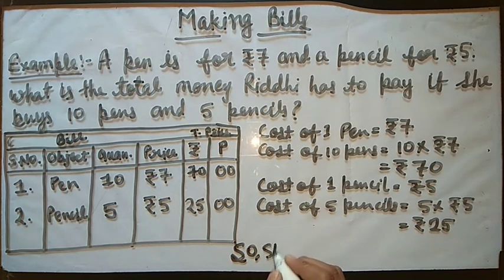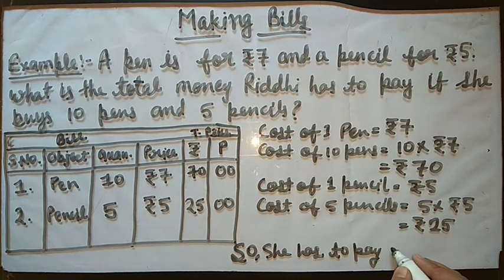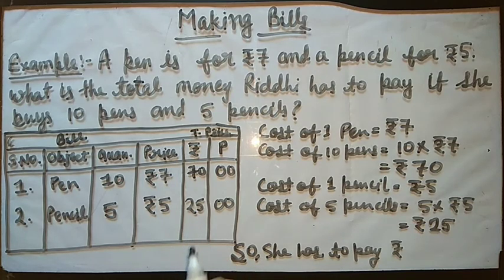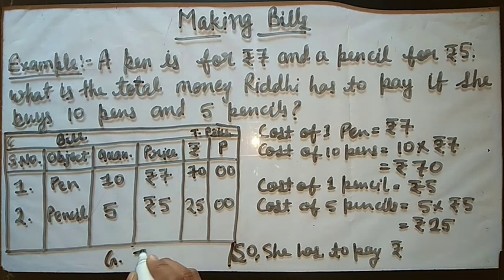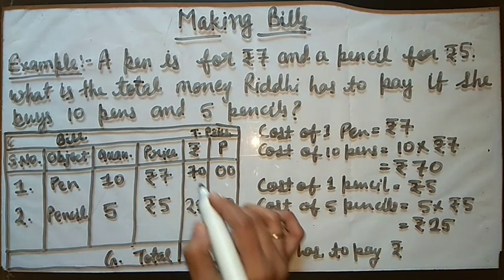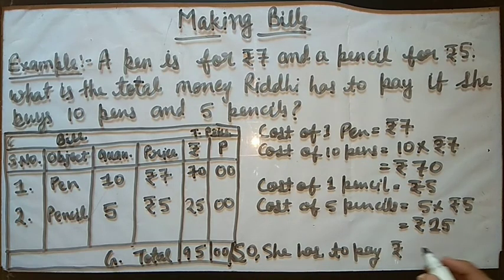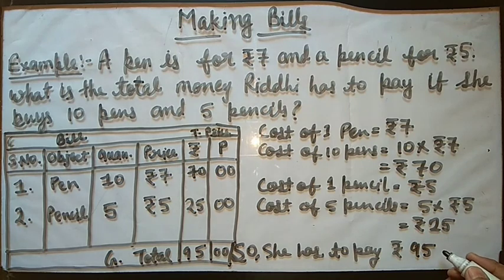Our bill is ready. She has to pay rupees. Now we have total. Here we have grand total. How much? 7 plus 2 is 9. So she has to pay rupees 95.